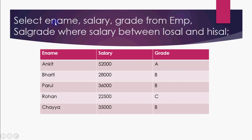So the query we write fetches employee name, salary, and grade from the emp and salgrade tables, with the condition: WHERE salary BETWEEN losal AND hisal. The name columns in these two tables are different, so there is no ambiguity and no need to prefix the table name. This query will link the records accordingly and display each employee's grade. This type of join — where two tables are linked but the condition is not equality — is called a non-equi join. When the condition is equality, it's an equi join; when it's something else like BETWEEN, it's a non-equi join.